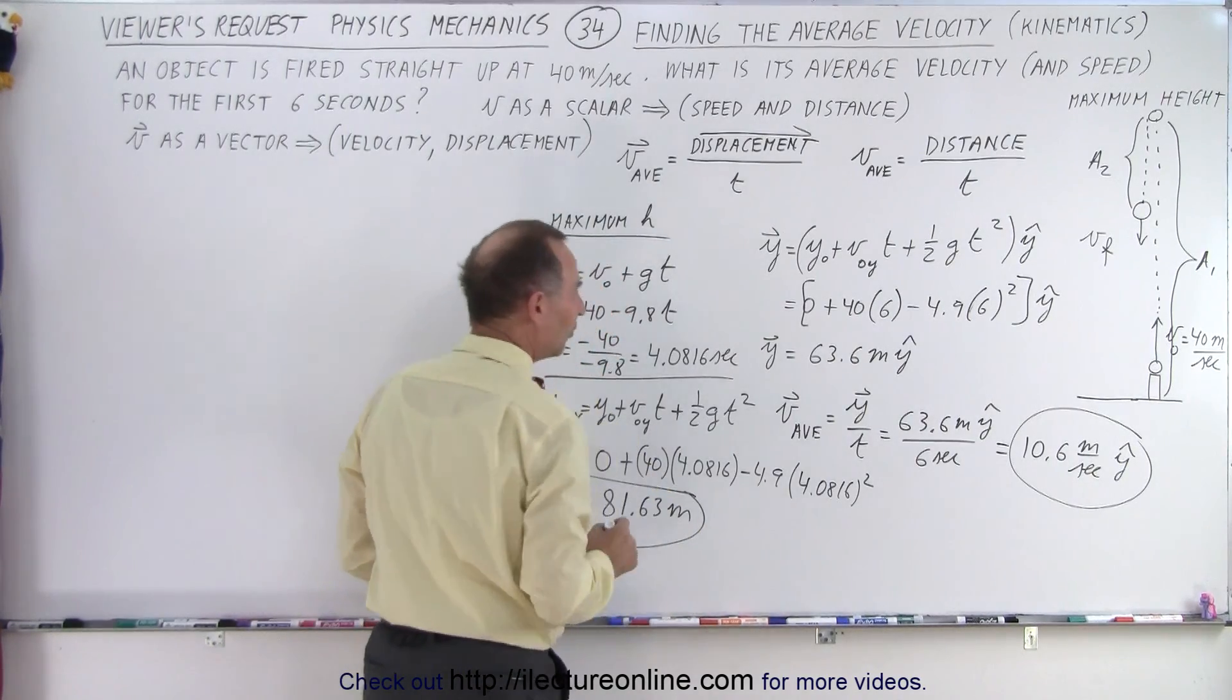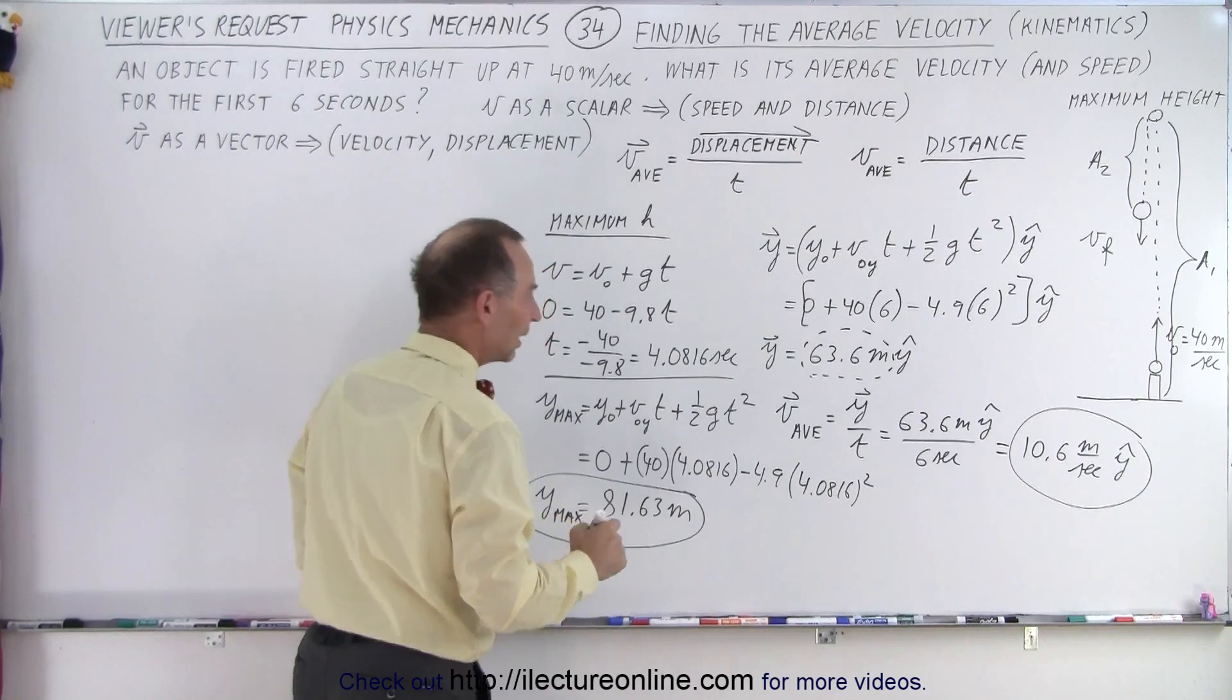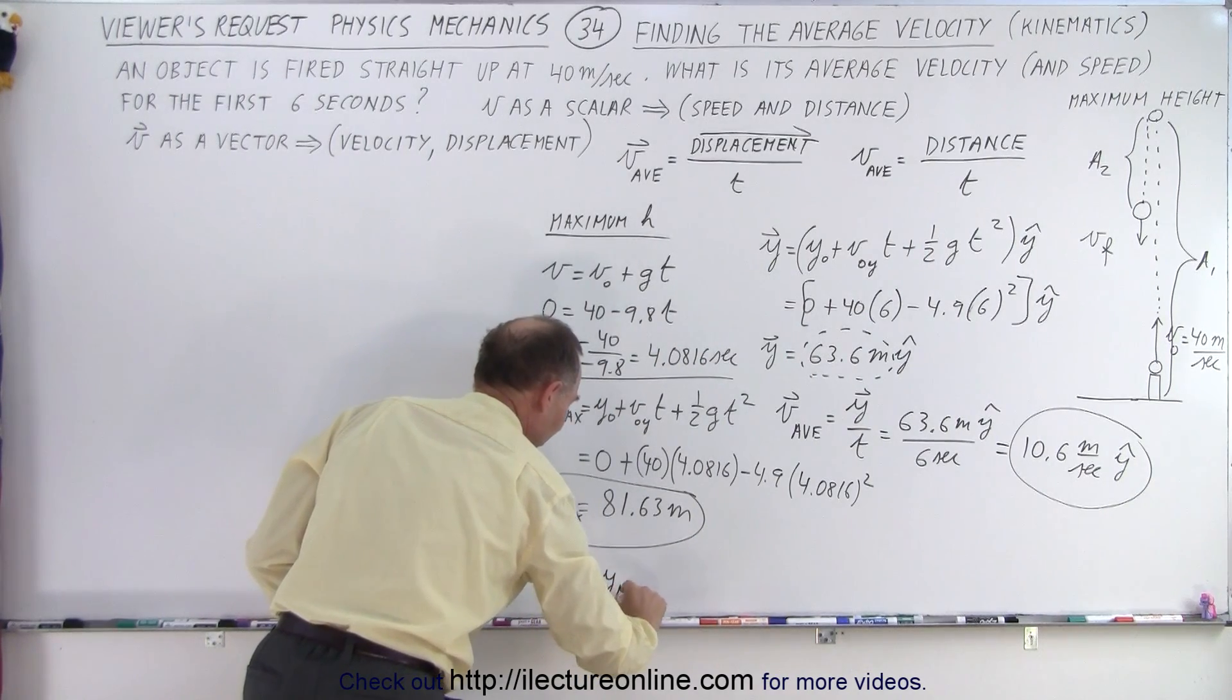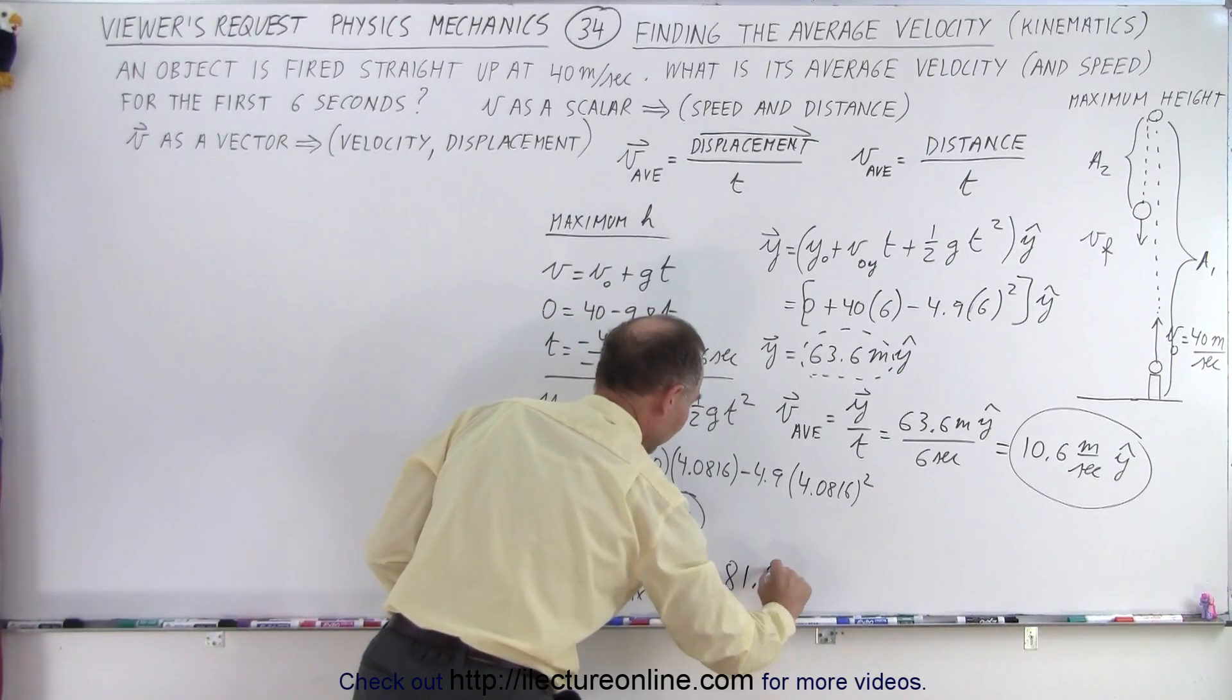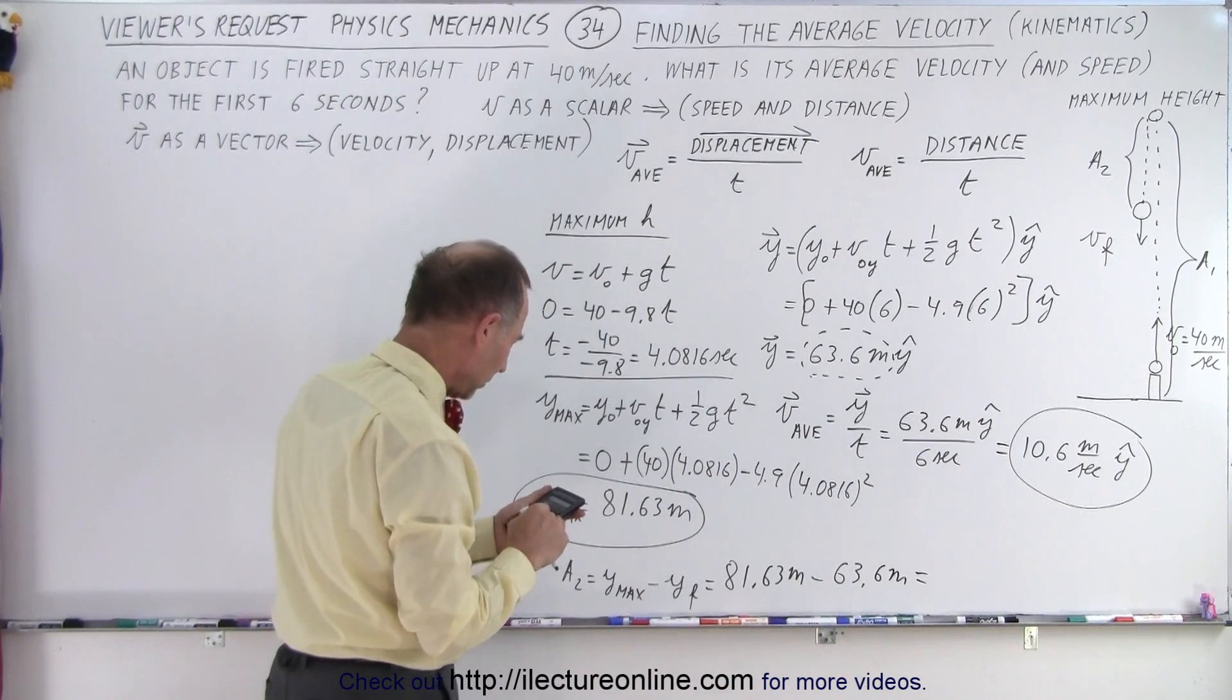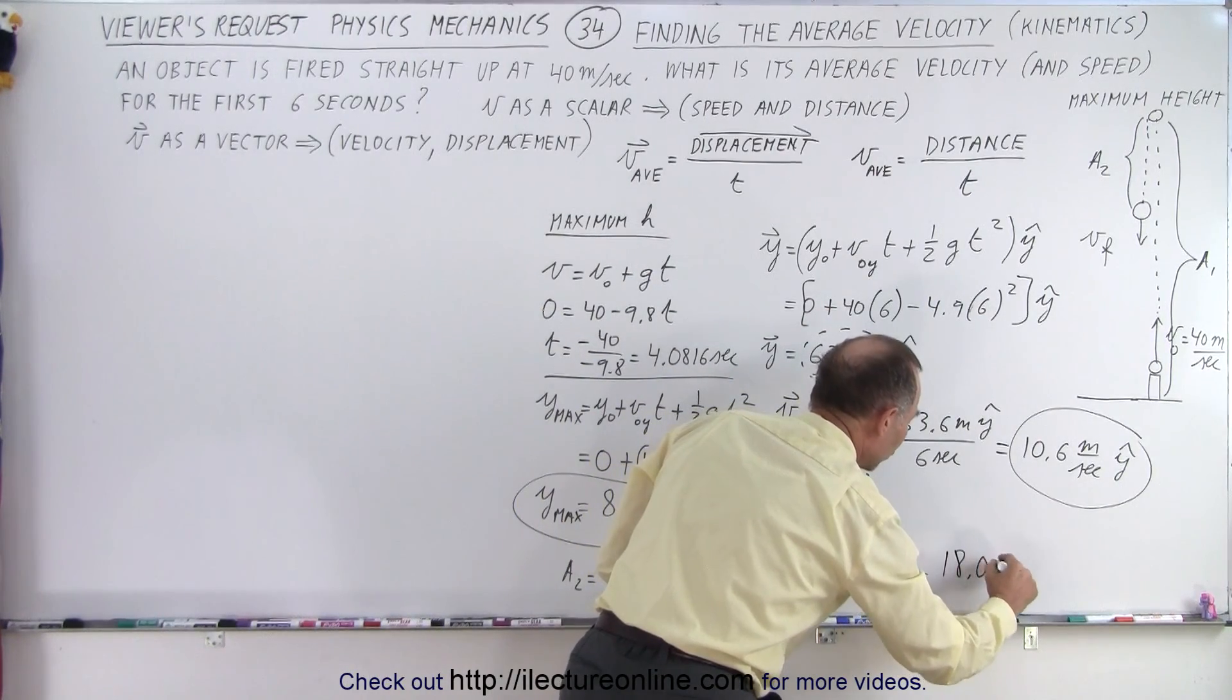So the maximum height is this. The height attained after 6 seconds is this. So then we can calculate this distance. We can call it A2. So the distance A2 is equal to y max minus y final. So in this case, that would be 81.63 meters minus y final, which is 63.6 meters, and that'll give us 81.63 minus 63.6. That gives us 18.03 meters.